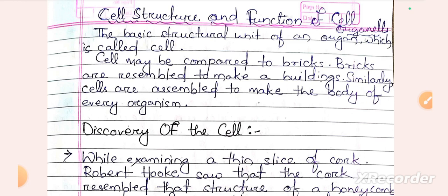The human body is made up of basic units called cells. Cells may be compared to bricks — just as bricks make up a building or house, cells make up the body of every organism.